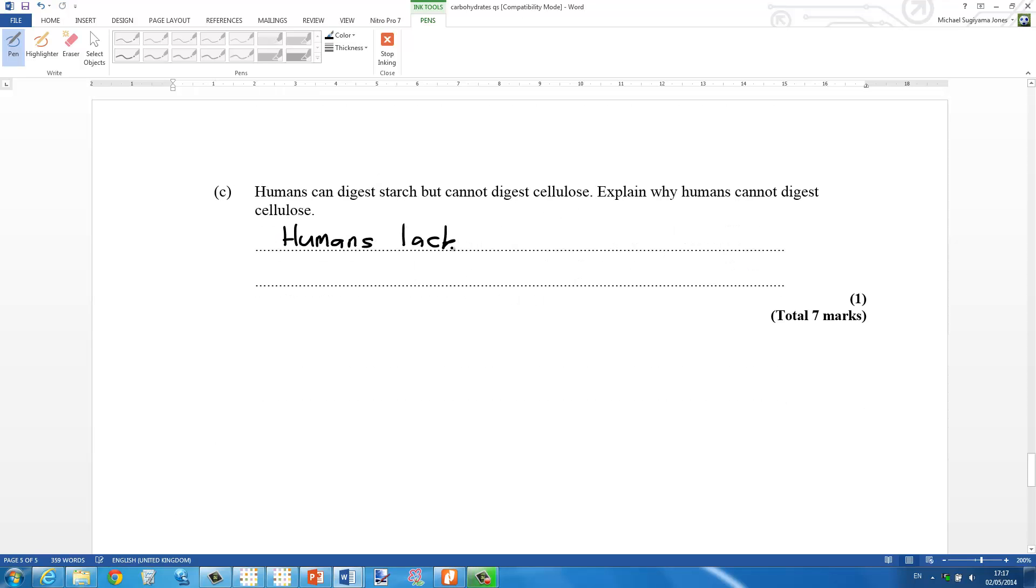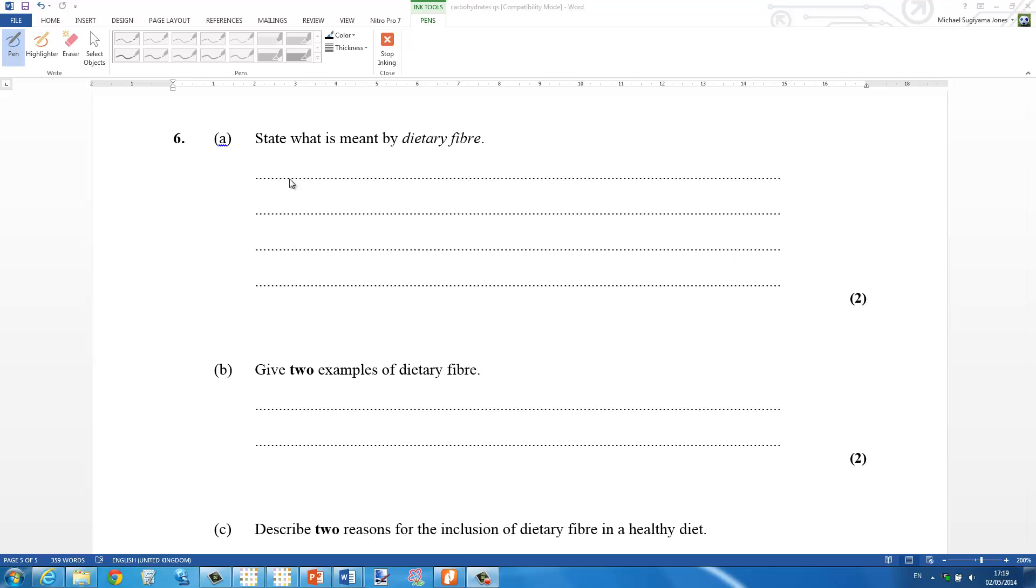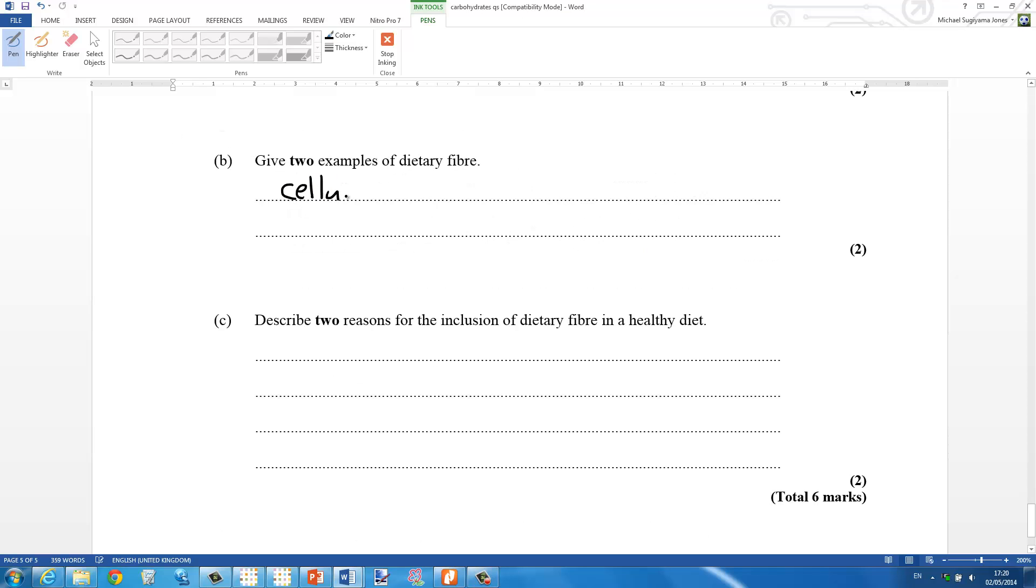Next is about explaining why humans cannot digest cellulose. Because humans lack the enzyme cellulase. So moving on. Dietary fiber is plant material that cannot be digested in the human body. It passes straight through. The reason is because humans lack the enzyme cellulase. So that means we cannot digest plant dietary fiber or plant material. Two examples are cellulose and pectin.